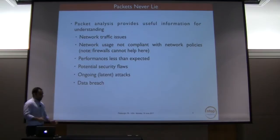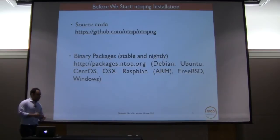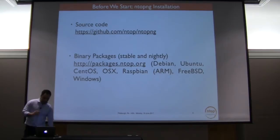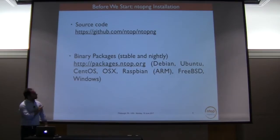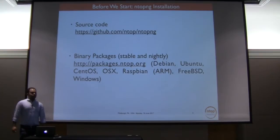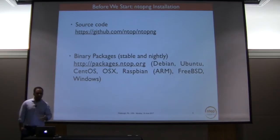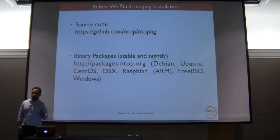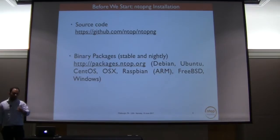This is basically the motivation — some reasons describing why it's important to monitor our network. As ntopng is an open source project, you can get the sources from our URL. We are now at around 1,300 GitHub stars. If you don't want to compile and build the sources, you can use a packaged version. We support several architectures and operating systems: Debian, Ubuntu 12, 14, and 16, Raspbian and thus the Raspberry Pi, FreeBSD 10.3, pfSense, and Windows.